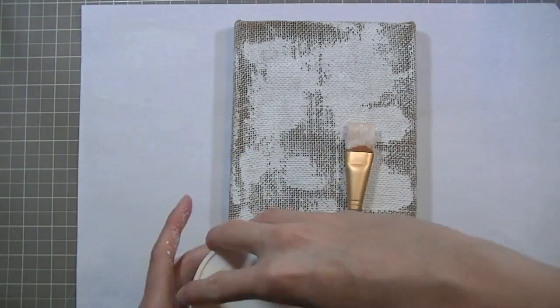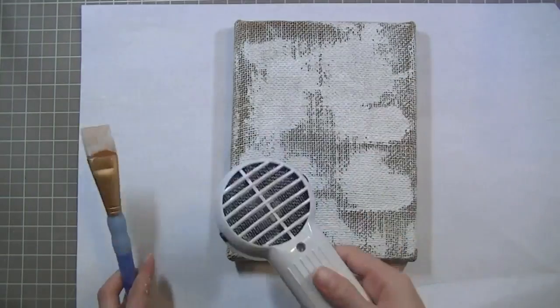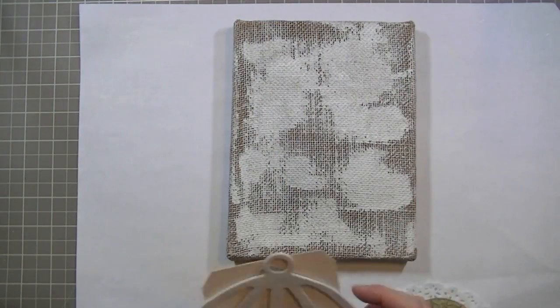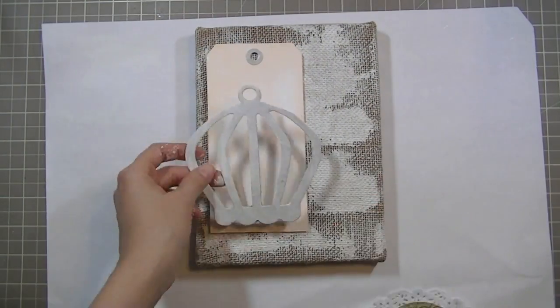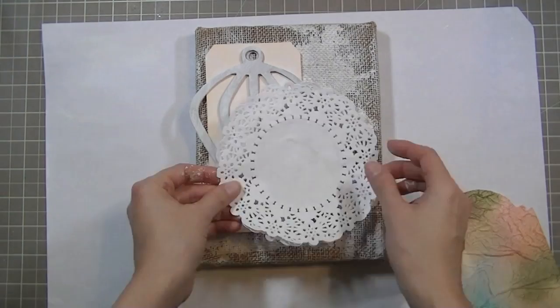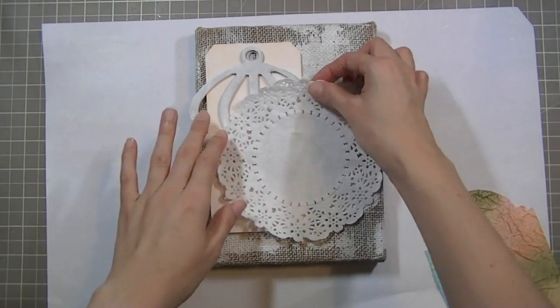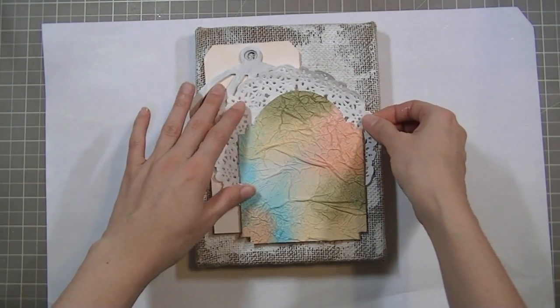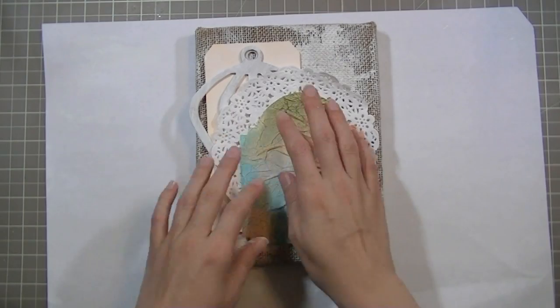I'm doing the same thing with the burlap panel. Just a very distressed look and shabby chic is what I'm going for. And I'm going to try to figure out where my placement will be. And that's technically all I'm doing here.